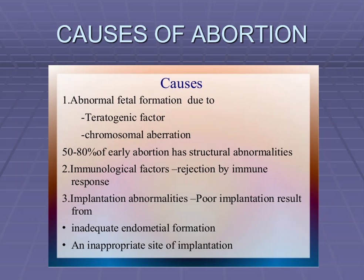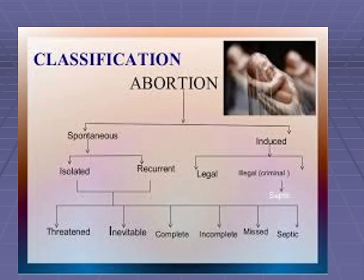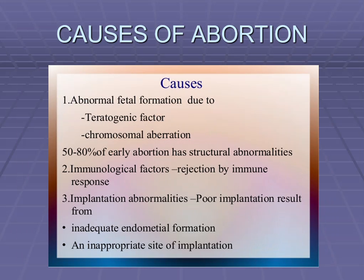The causes of abortion include abnormal fetal formation, immunological factors, and implantation problems. Under fetal formation, teratogenic factors are important — during pregnancy, mothers are not allowed to take any medication without a doctor's prescription, because drugs can cross the placenta and umbilical cord and cause serious congenital anomalies, known as teratogenic effects. Chromosomal aberration, meaning chromosomal abnormalities, accounts for 50 to 80% of early abortions having structural abnormalities.